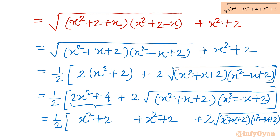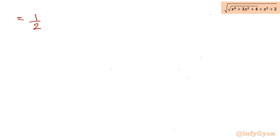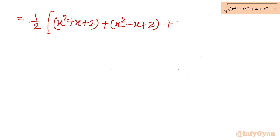Now I will do one more algebraic manipulation step, which is I will add and subtract x. So it will convert this expression into x squared plus x plus 2, plus x squared minus x plus 2, plus 2 times square root of their product. So I will write one half times x squared plus x plus 2, plus x squared minus x plus 2, and then 2 times square root of both brackets.